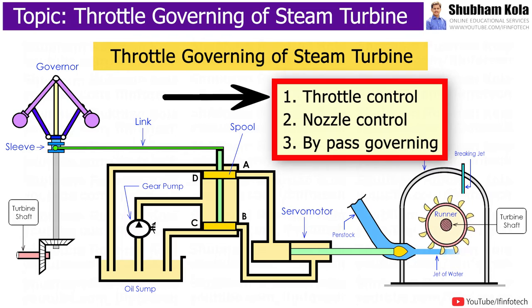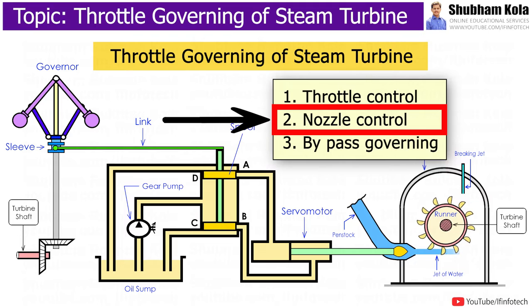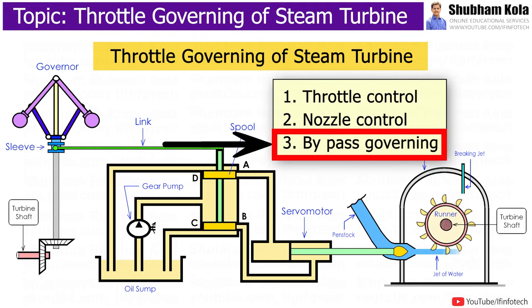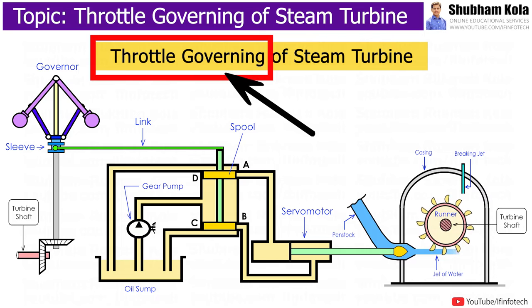Generally, there are three types of governing used: throttle control, nozzle control, and bypass governing. In this video lecture, we will learn how throttle control governing works.